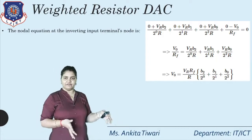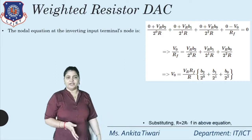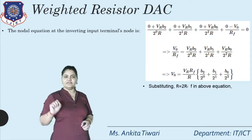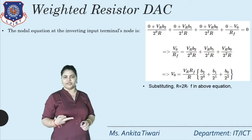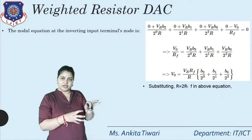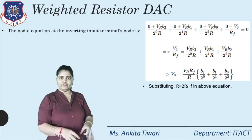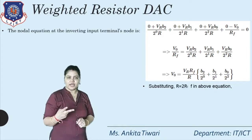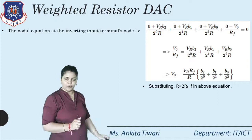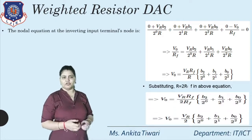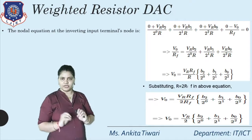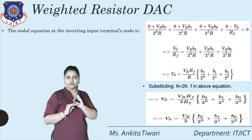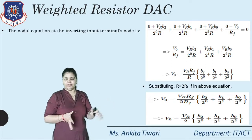This is the V0 value we need to calculate initially when designing any 2-bit, 3-bit, or 4-bit circuit. An important constraint is that the resistor R is taken as two times the feedback resistance Rf — that is, R = 2Rf. Substituting R = 2Rf into the equation, Rf cancels out and we get the final result: V0 = (Vr/2) × (V2 + V1/2¹ + V0/2²).